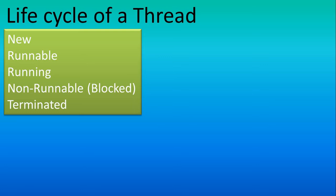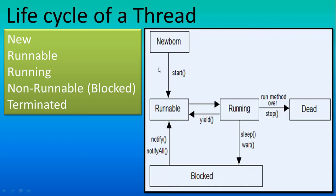There are some stages of the thread life cycle. These stages are: new, terminated, running, runnable, and block. New means the starting point of the thread, and terminated is the ending point. Running, runnable, and block are the intermediate stages. There is a diagrammatic representation — the new born stage is the first stage.